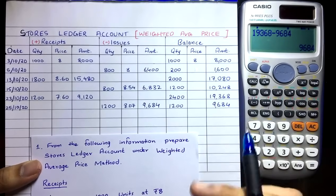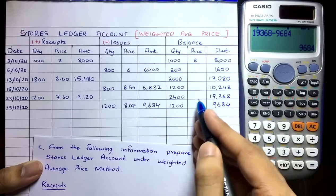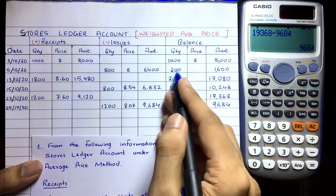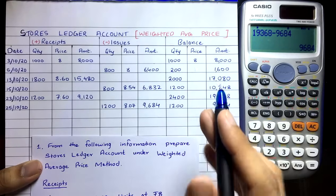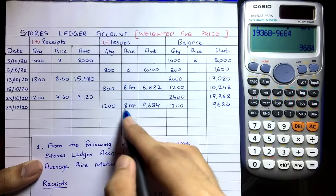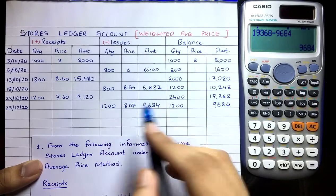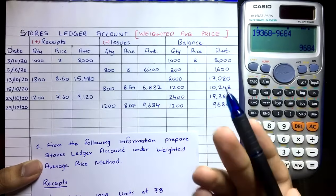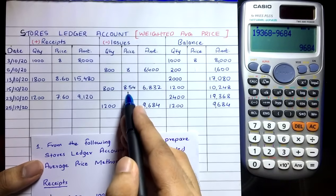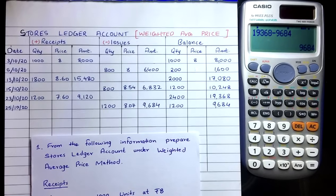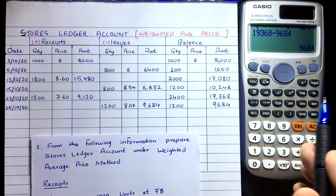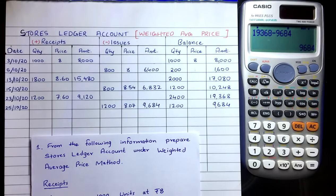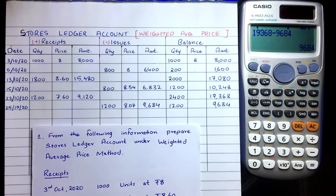In summary, in the average method: leave the prices column in the balance empty; whenever you receive a purchase, combine it with whatever is in the balance column; to find the weighted average price, simply divide total cost available by total quantity available and issue at that price. This method is very simple — even easier than the simple average method.